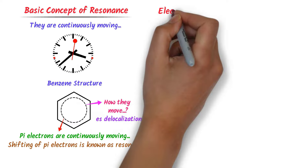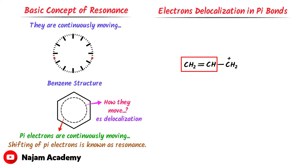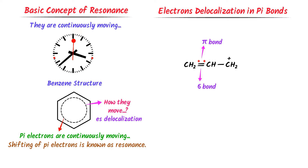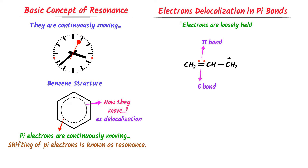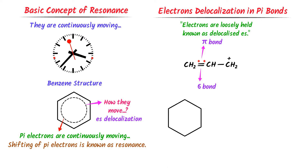Hence, we will learn the complete concept of electron delocalization in pi bonds. Consider this compound. There is one double bond between the first carbon and second carbon. We know that in every double bond, one is a sigma bond and one is a pi bond. In a pi bond, electrons are loosely held between atoms and move freely. These freely moving electrons are known as delocalized pi electrons. So, electrons are loosely held in pi bonds and therefore move freely inside the molecule.